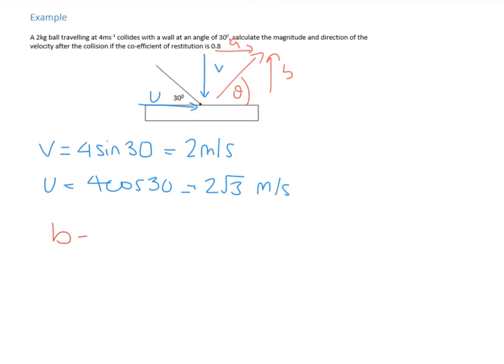So, we know the coefficient of restitution only acts on the perpendicular, so it's only going to impact on B. So, B is going to be calculated by E times V, which is 0.8 times 2, which gives you 1.6. So, we know that A is going to be equal to U, because the coefficient of restitution doesn't act on parallel components.